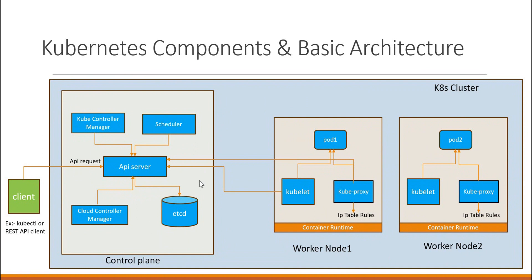Let us discuss about ETCD. ETCD is an important component in the control plane. It stores all the data of the cluster — data about the nodes, data about the pods, and data about various objects created in the Kubernetes cluster. For example, information like what pods are running in the cluster, which pod is running in which node, and what is the status of these pods. Similarly, it also stores information about all other resources in the Kubernetes cluster. ETCD is a key-value store, meaning the data is stored in terms of keys and values.